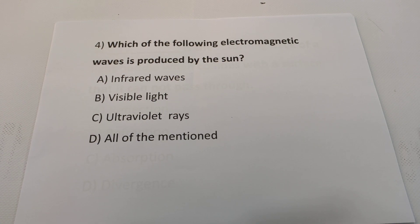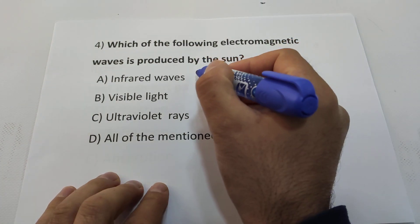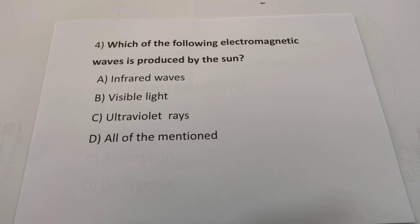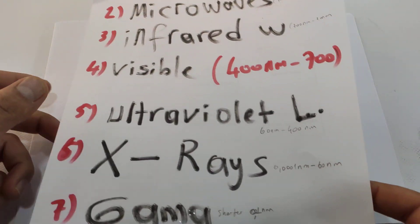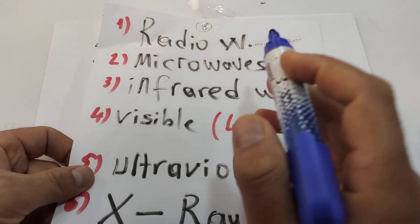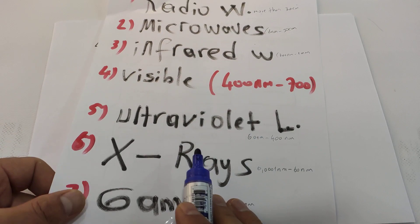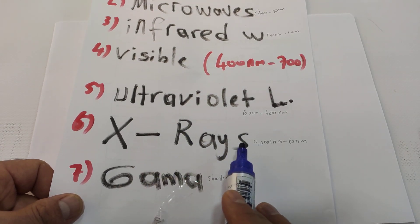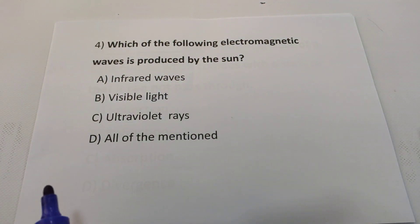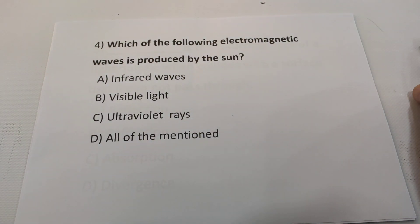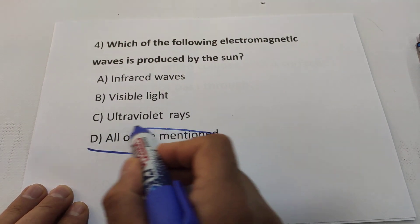Question 4: Which of the following electromagnetic waves are produced by the sun? Don't forget there are seven kinds of electromagnetic waves: radio waves, microwaves, infrared waves, visible light, ultraviolet light, X-rays, and gamma rays. Infrared waves, visible light, and ultraviolet light are all produced by the sun, so the answer will be D.